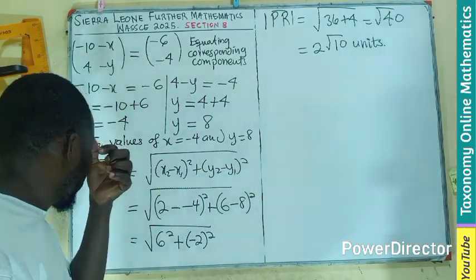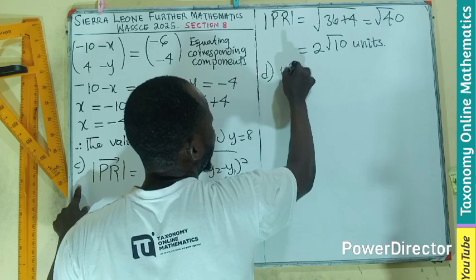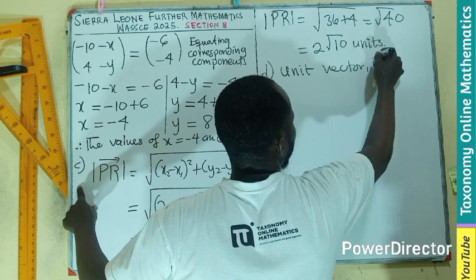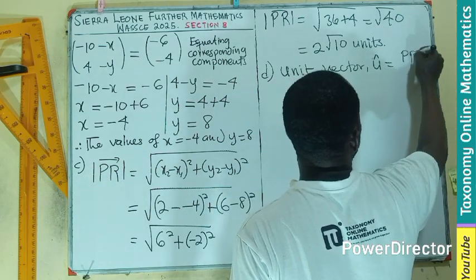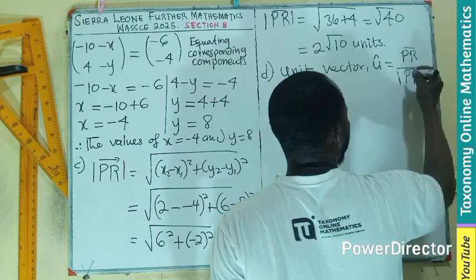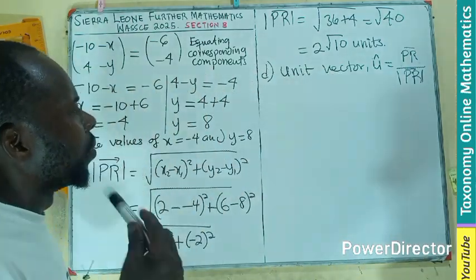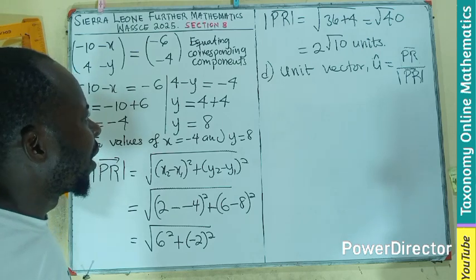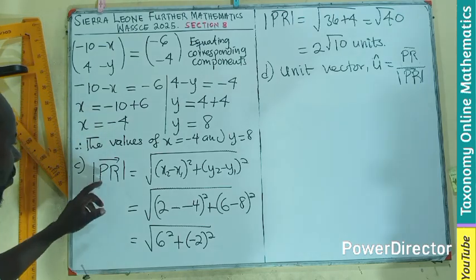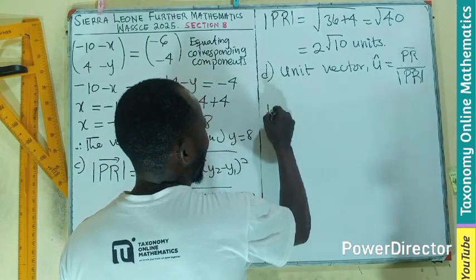Now we are looking for the unit vector. The unit vector equals the vector PR divided by the magnitude of vector PR. Do I know the vector itself? Yes. Do I know the magnitude? Yes. We have to find vector PR first.